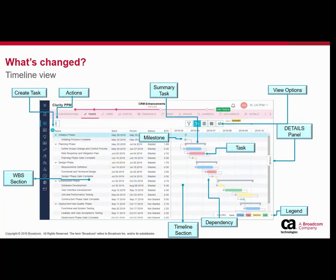Going from the two different panes: the left pane is the WBS section, where you see all your tasks — if there are summary tasks you will see those as well as their subtasks. If you have multiple levels within a summary task you will see all of those levels in the WBS section. The right is your timeline section, where you see the same corresponding tasks as timeline bars, with the bar length representing the duration of that specific task.